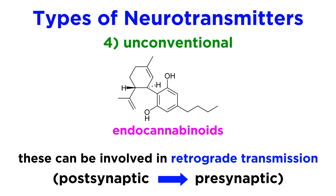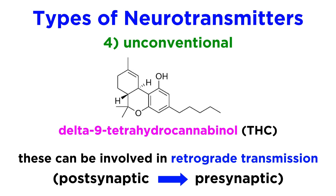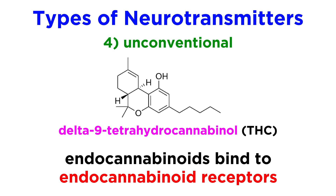Another class of unconventional neurotransmitter is the endocannabinoids, which are also retrograde transmitters. These are similar in structure to delta-9-tetrahydrocannabinol, the psychoactive agent in marijuana, and also similar in function, as they all bind to endocannabinoid receptors.